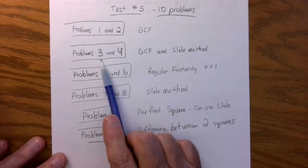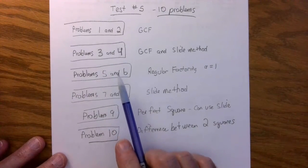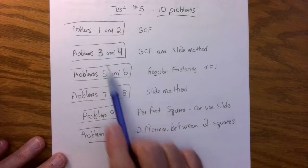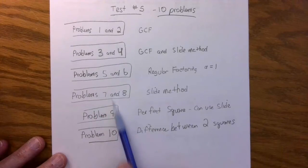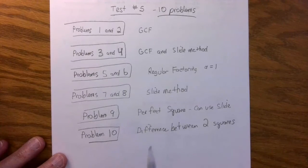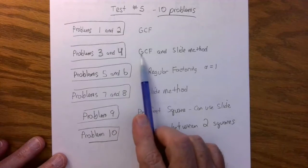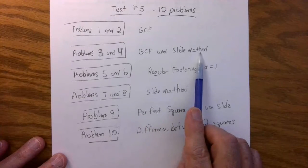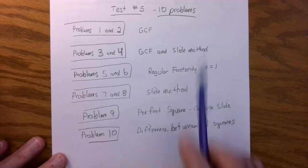Problems three and four might actually be the hardest problems. Don't get bogged down on it. If you're struggling, just skip them and come back. Do some of the easier ones and then come back. Three and four might be the hardest problems because you've got to take out a GCF first and then use the slide method to factor it completely.